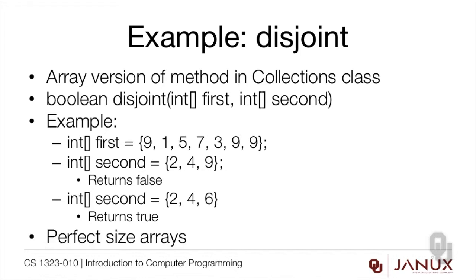One thing to notice here is that I'm implying perfect size arrays. You can tell this from the signature of the method — if these weren't perfect size arrays, we'd need to know the size of first and the size of second explicitly. So you can tell whether there's a perfect size or an oversize array just by looking at the method signature if you think it through.